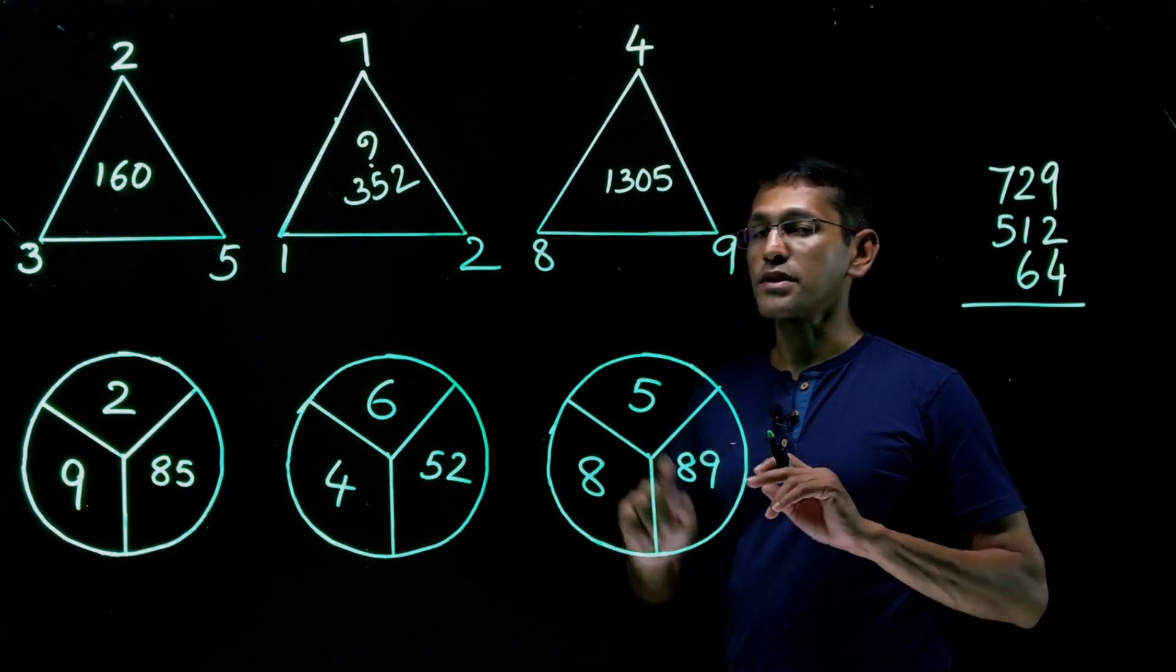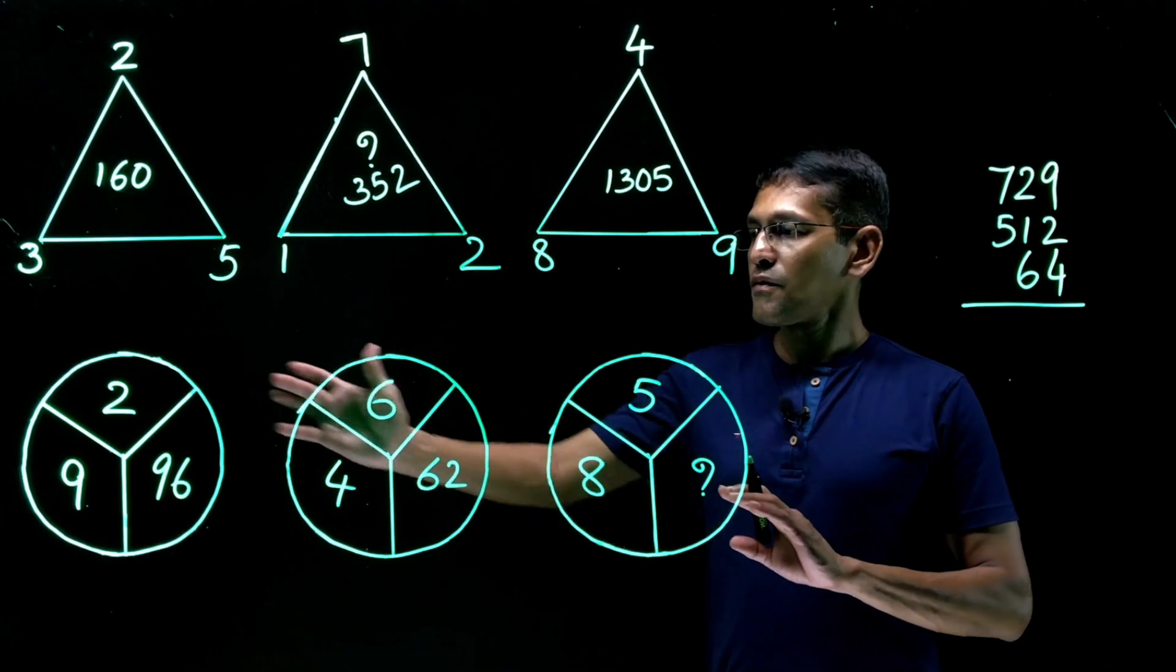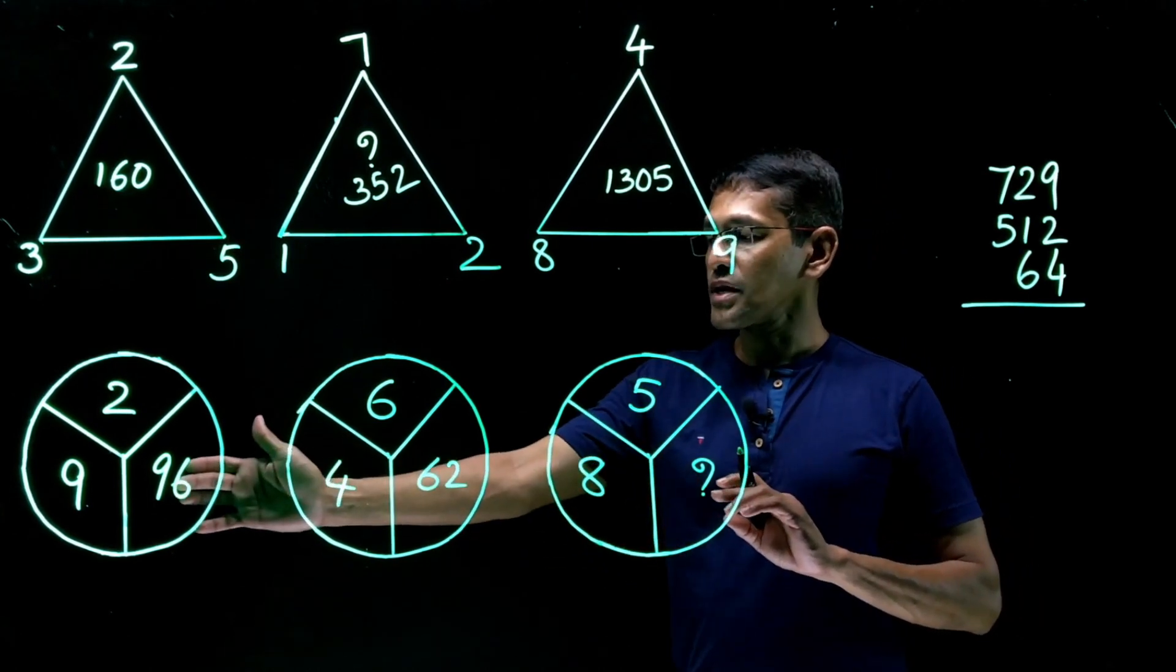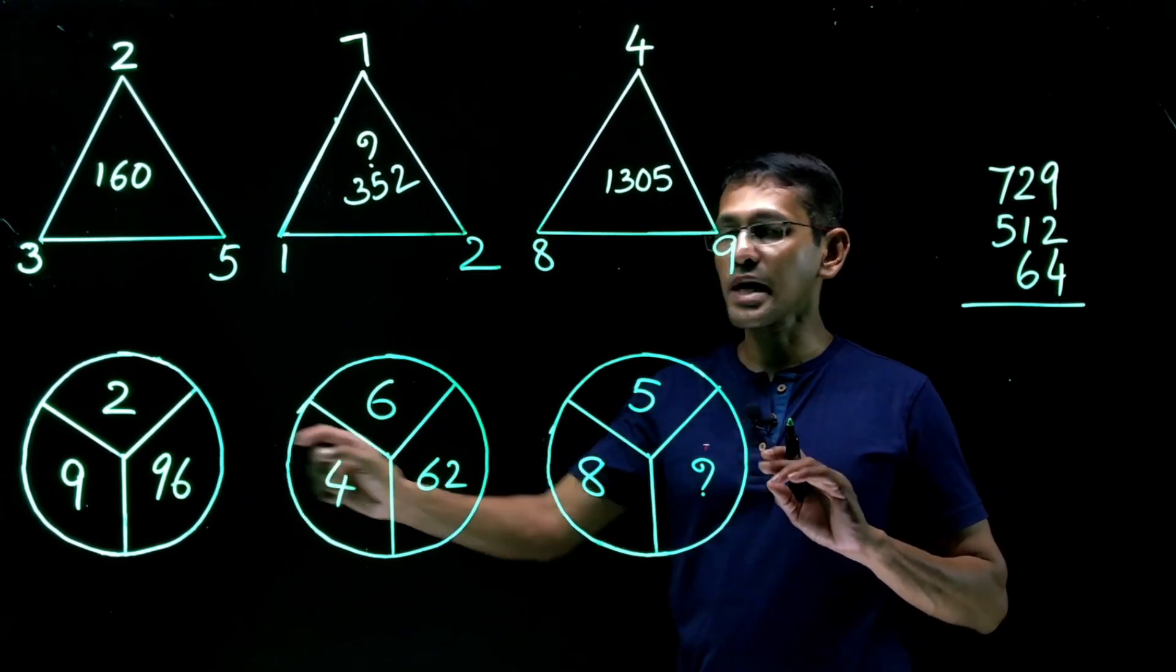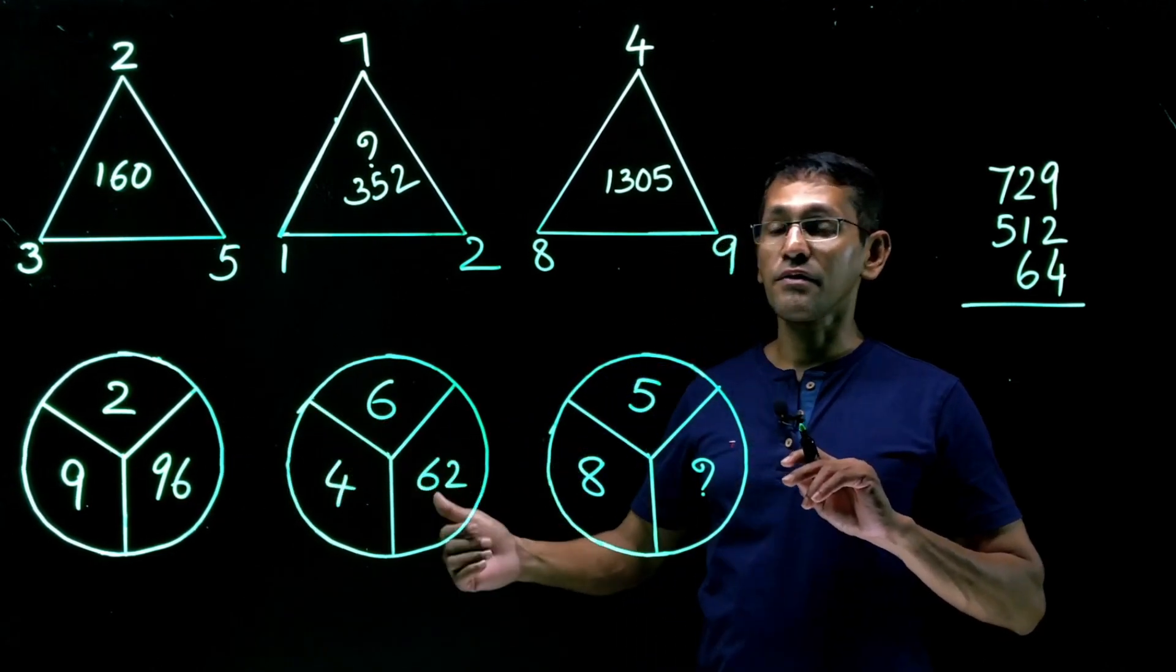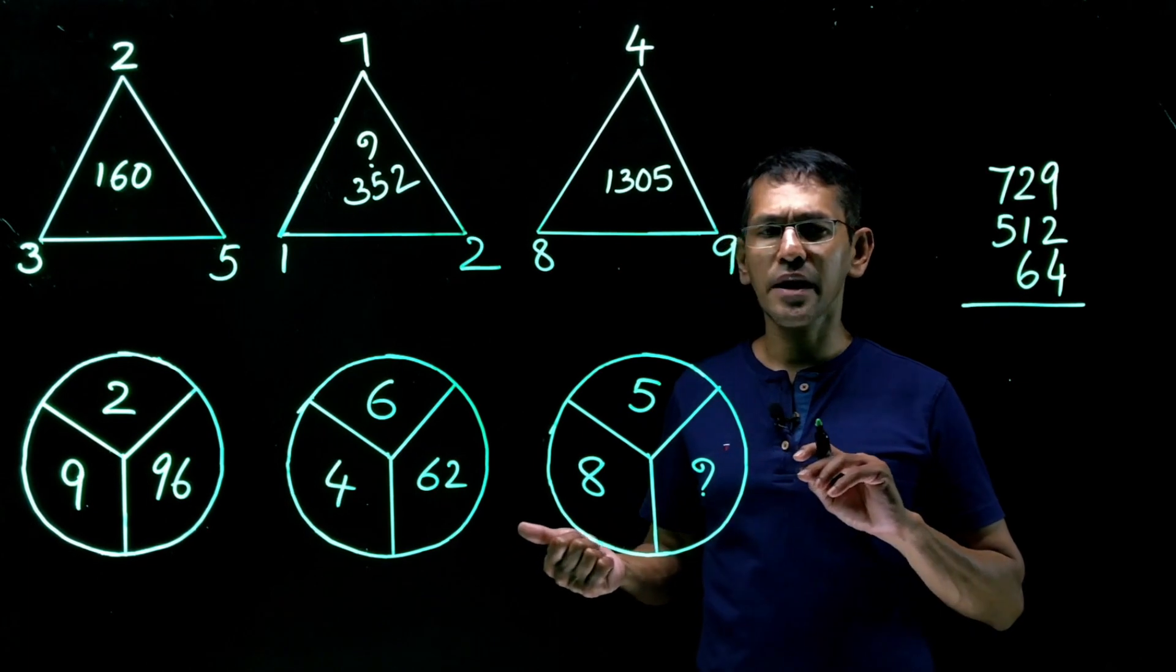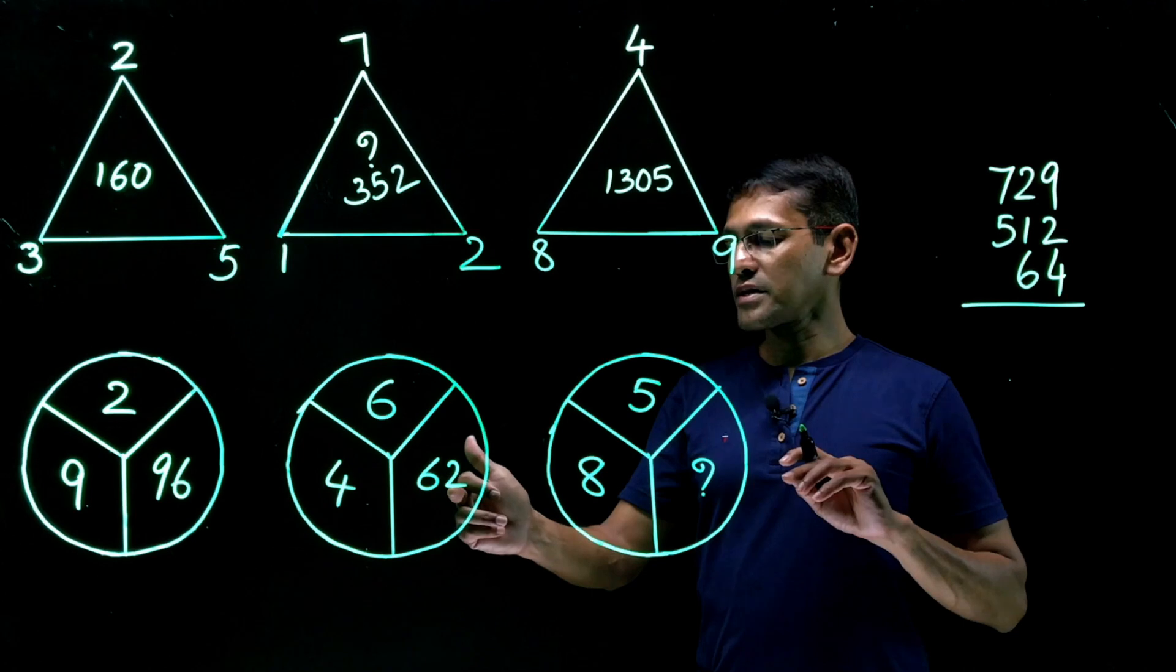Now, I'm going to change these numbers. This time, this is the real question in front of you. 2 and 9 is not changed. 6 and 4 is not changed. 5 and 8 is not changed. However, the numbers over here, 96, 62 and question mark. So we need to find the pattern here. Why is 96? Earlier, we had 9 squared plus 2 squared, we had 85. But in this case, this is 96. So what is the pattern?